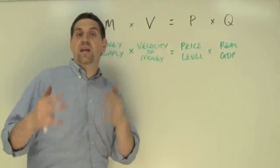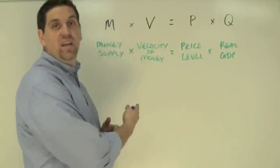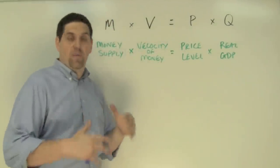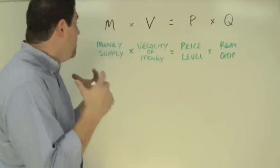To answer this question, let's look at the identity or equation for the Quantity Theory of Money. M is the money supply, the amount of cash and demand deposits out there, the amount of money in our economy.